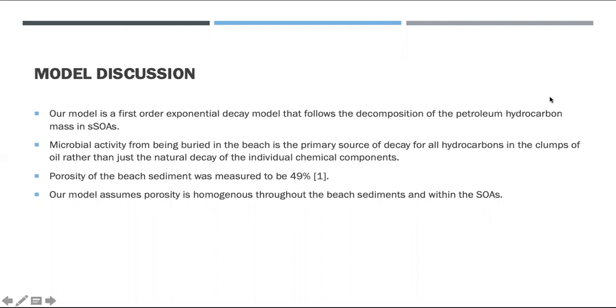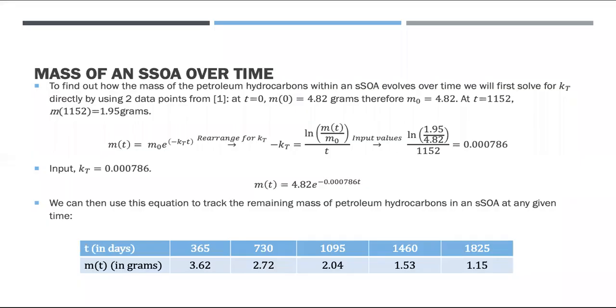We know porosity to be 49%, and assuming the entire beach surface is homogenous, that would mean we would keep this 49% constant anywhere on that beach surface when calculating how much mass it will lose over a certain amount of time.